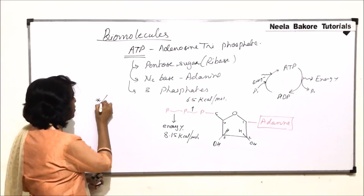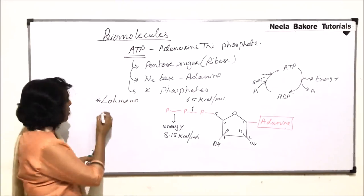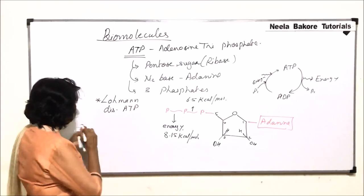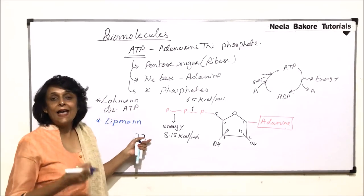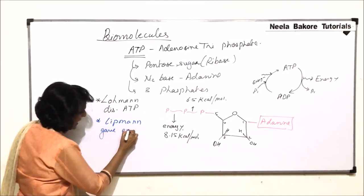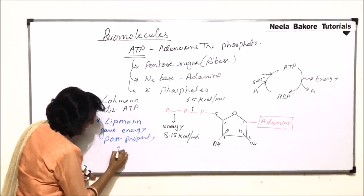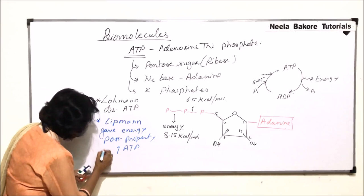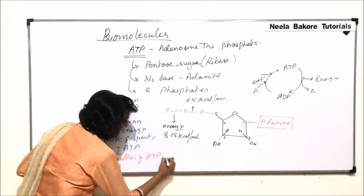The first scientist is Lohmann, who actually discovered ATP. Another scientist, Lipmann, gave the energy-possessing property of ATP — he identified that ATP stores and releases energy. That is why Lipmann is known as the father of the ATP cycle.